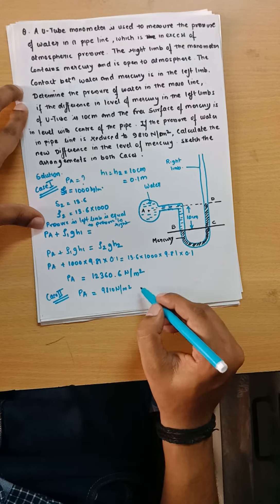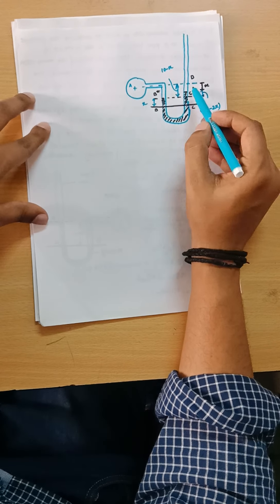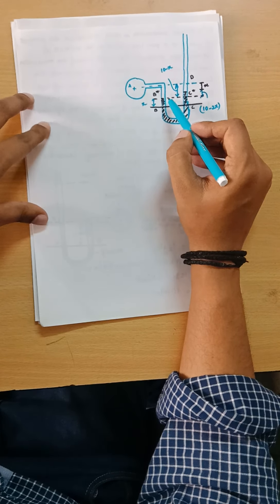As you can see, previously we calculated the pressure at A which came out to be 12360.6 Newton per meter square. So this value is greater than the value given in Case 2.